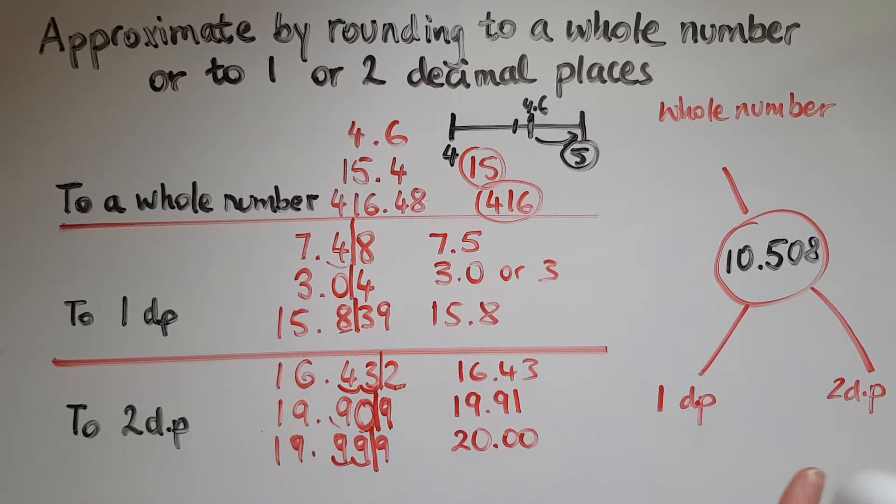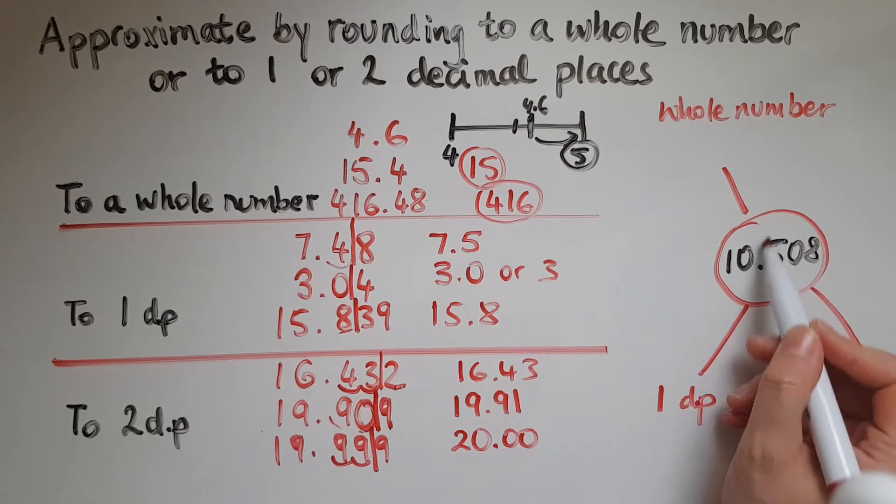this is actually 10.508. So I'll keep it as 10 or go to 11 is the question. And to decide that, here is the cutoff point. I look on the right.